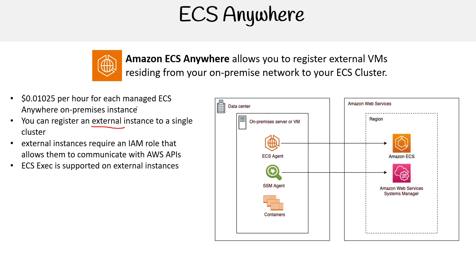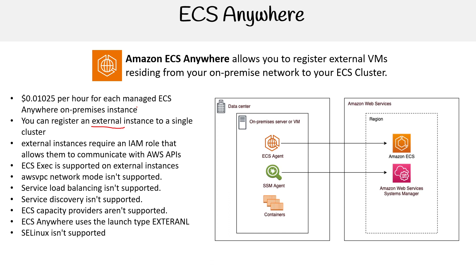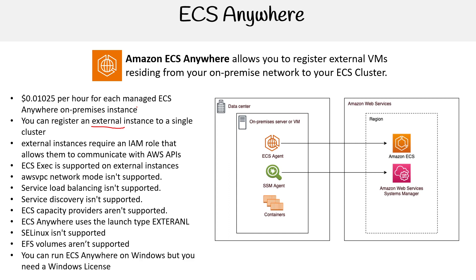ECS exec is supported on external instances. VPC network mode isn't supported because you aren't deploying it in your VPC. Service load balancing isn't supported, service discovery isn't supported, and ECS capacity providers aren't supported. ECS Anywhere uses the launch type 'external.' SELinux isn't supported, which is a security feature. EFS volumes aren't supported. You can run ECS Anywhere on Windows, but you need a Windows license.